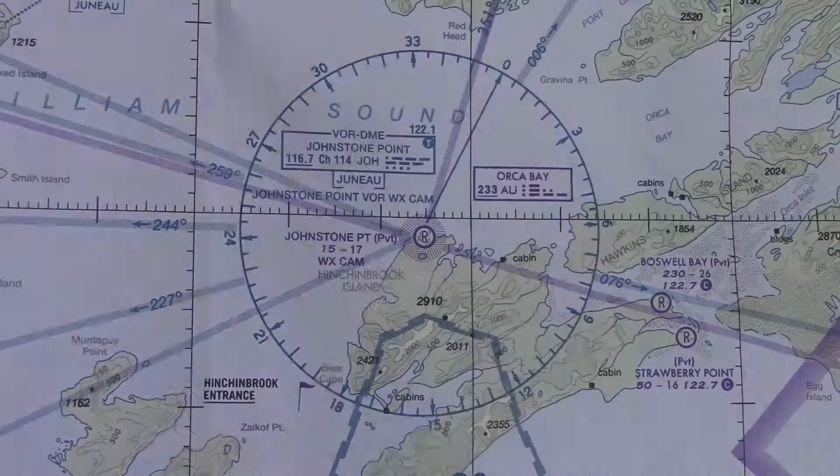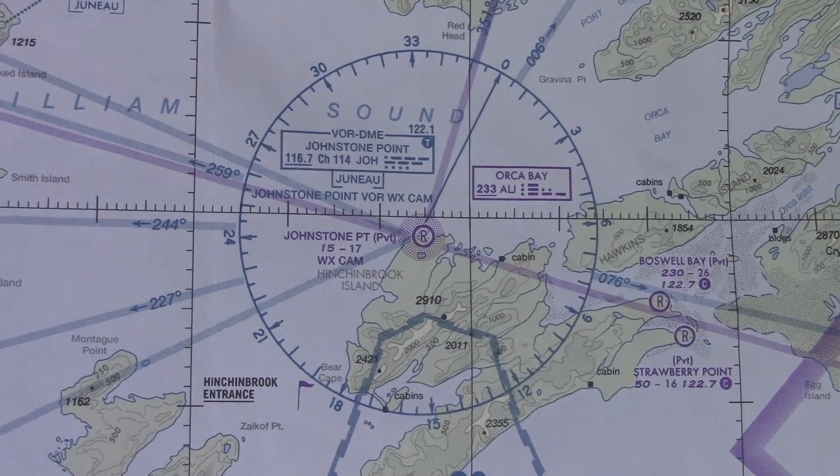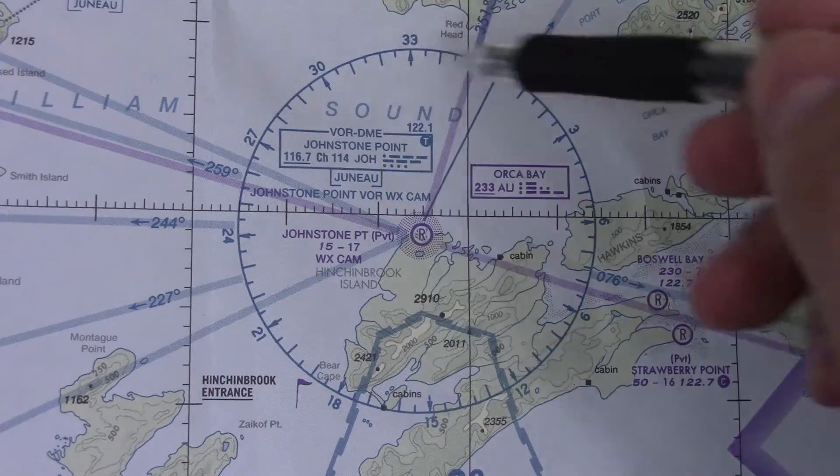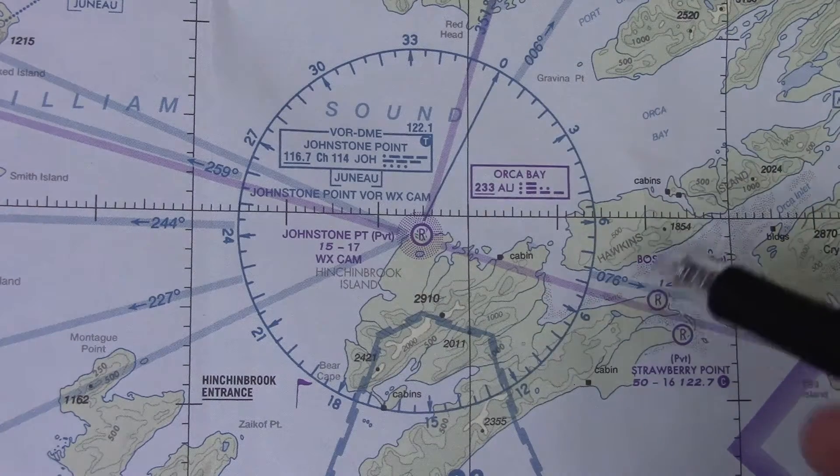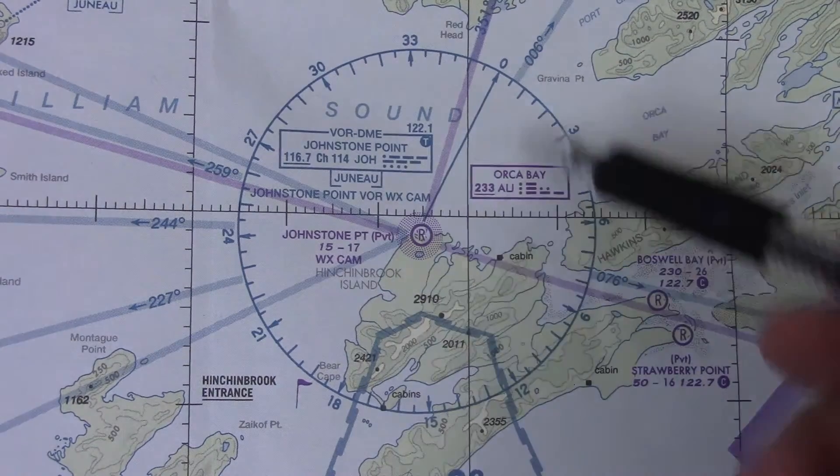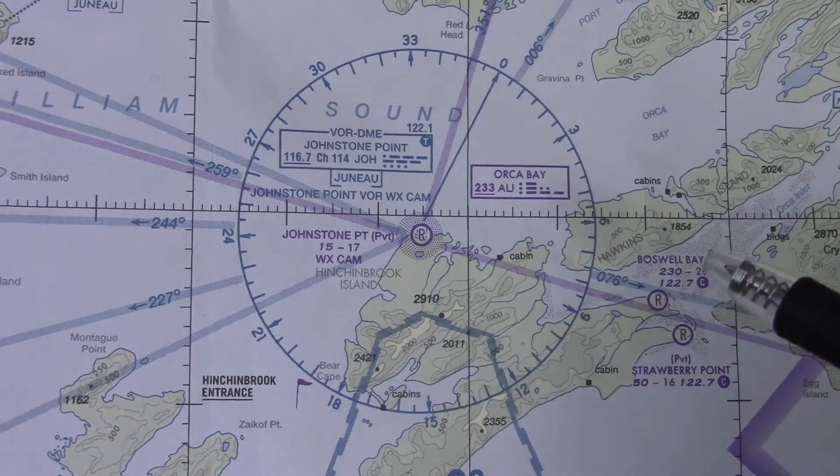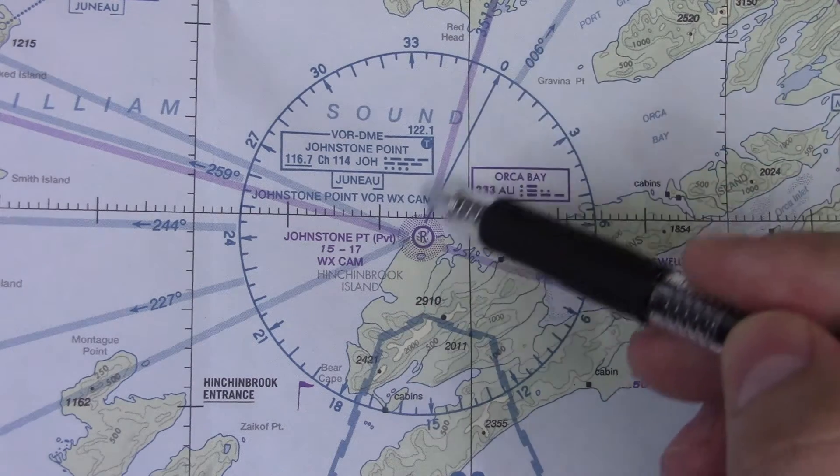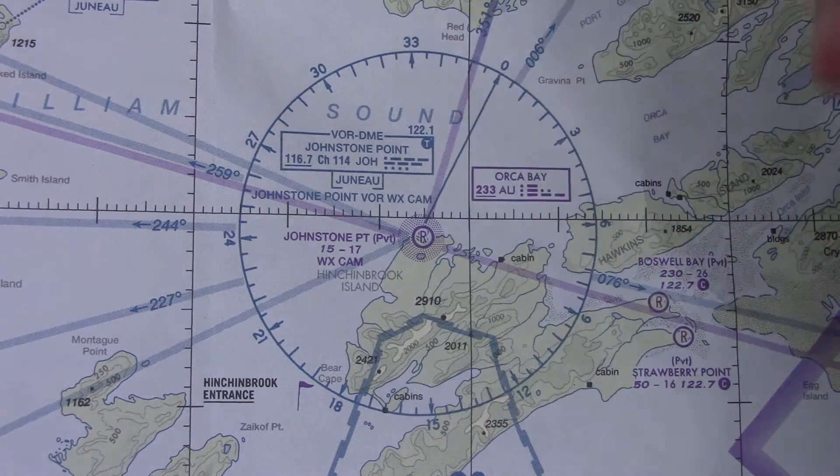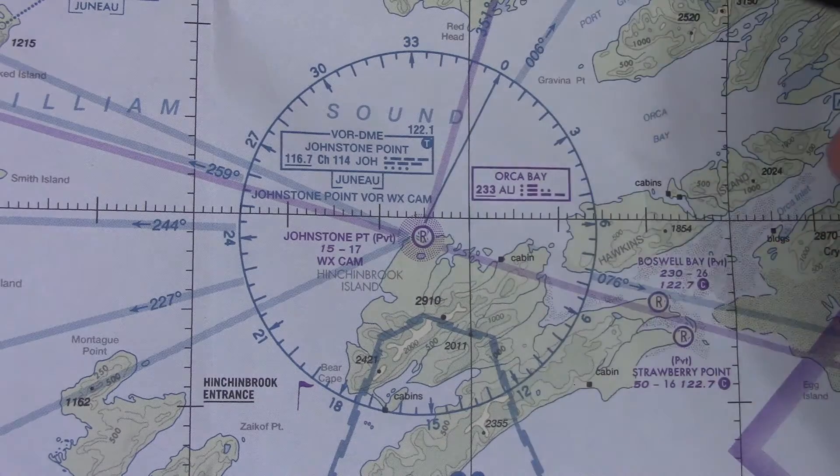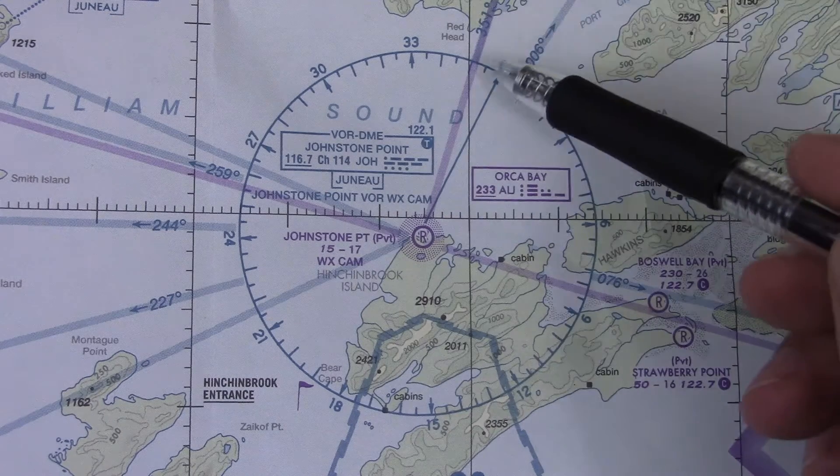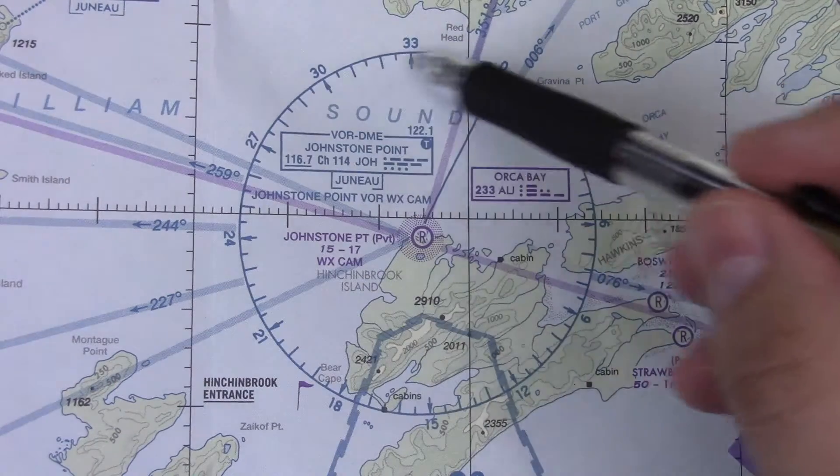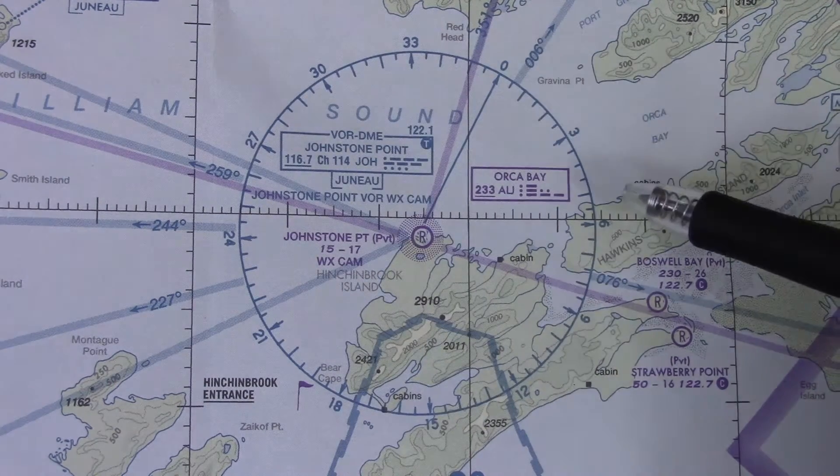What we're looking at now is the Anchorage sectional chart, and we're looking right here at the Johnstone Point VOR. This one is also DME, so it can actually show you your distance to this VOR, but we really just care about the VOR function right now. As you can see here, here's your zero, which is obviously magnetic. I mean, your north up here is going to be your true north, and this way around on the map, you're going to have your magnetic north. Here you have the zero, and of course you have a bunch of other numbers around here.